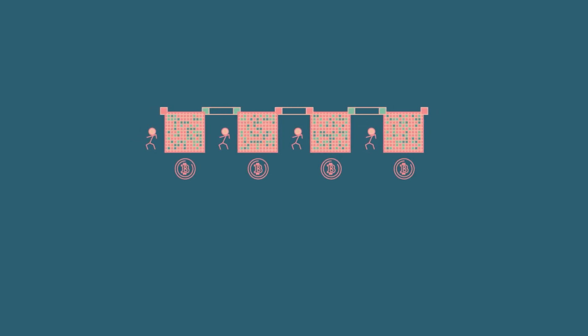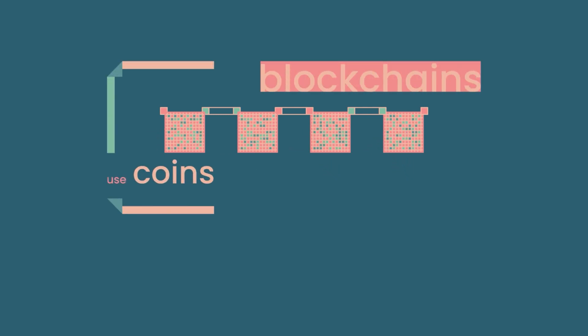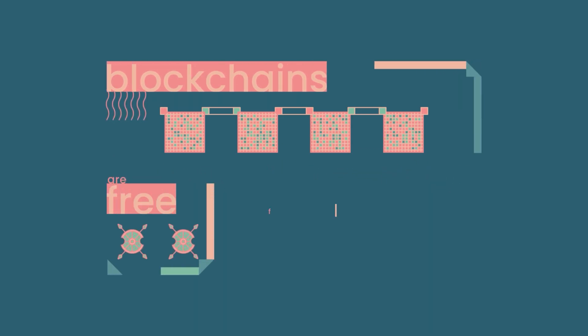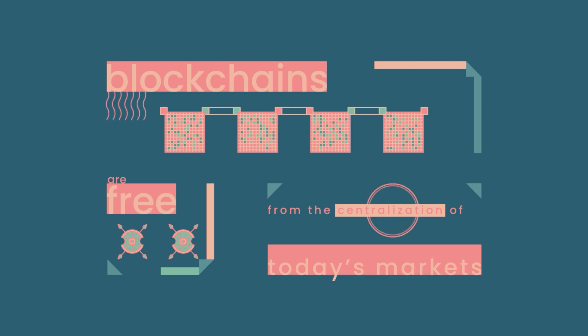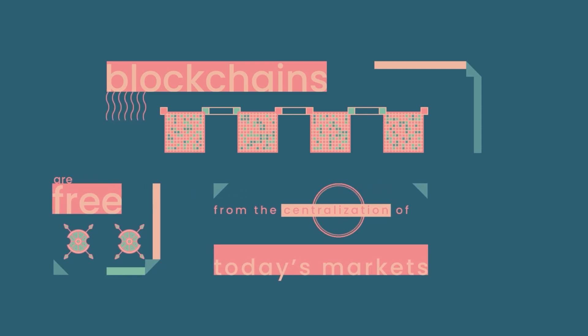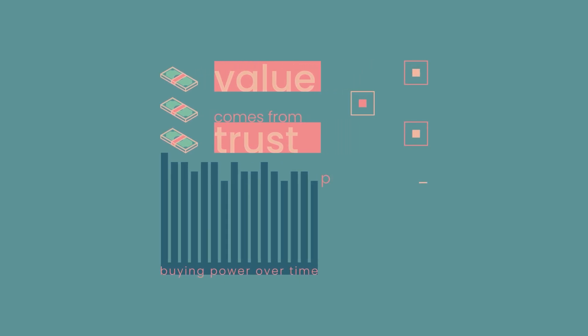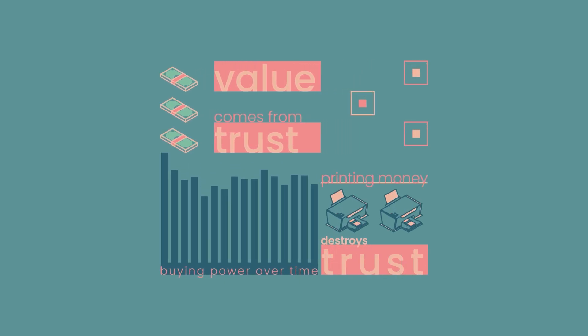The meritorious participants are those who work to advance the network. Society gives you money for giving society what it wants, whereas blockchains give you coins for giving the network what it wants. It's important to note that blockchains pay in their specific coin — not the financial market standard, money. Not relying on traditional money gives the network freedom from the centralization of today's markets. The value of today's government-backed currencies comes from people's trust in its retention of buying power. With central banks printing money and debasing a currency's value, people look for other monetary opportunities with similar utility.